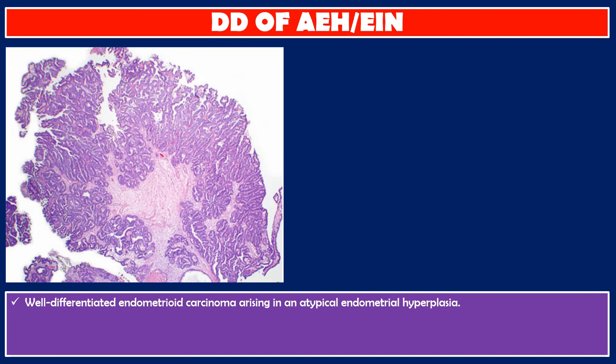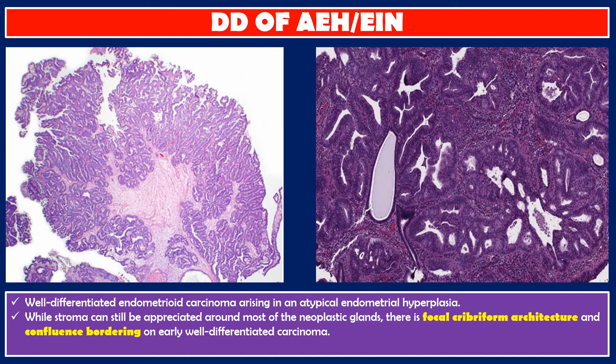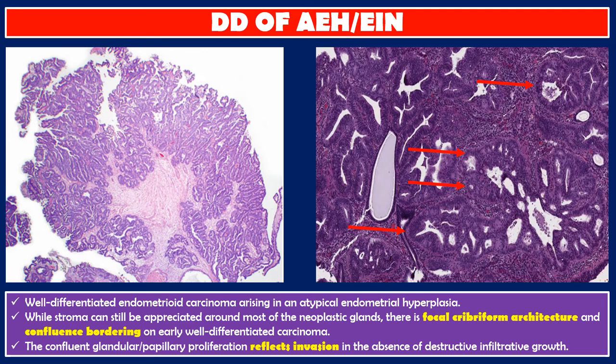This is a case of well-differentiated endometrioid carcinoma arising in an atypical endometrial hyperplasia. At high power, while stroma can still be appreciated around most of the neoplastic glands, there is focal cribriform architecture and confluence bordering on early well-differentiated carcinoma. The confluent glandular papillary proliferation reflects invasion in the absence of destructive infiltrative growth.